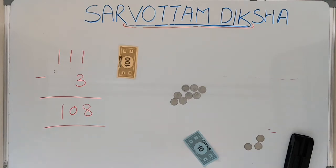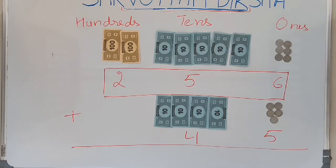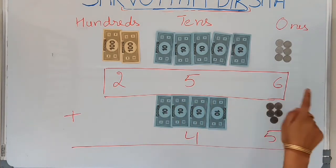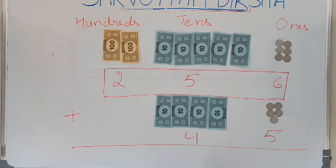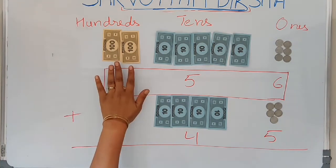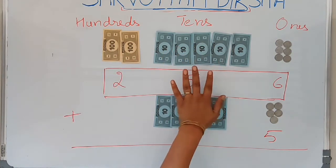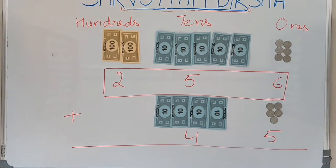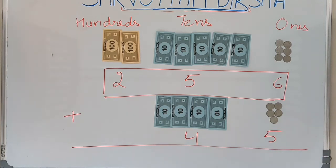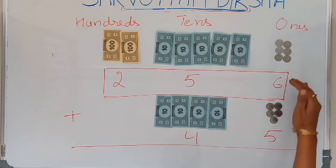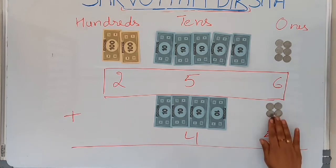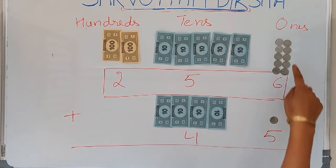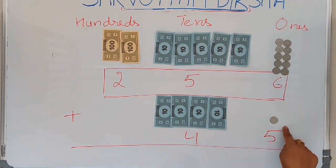So we have discussed borrow in subtraction and carry over in addition. Let us do a few more examples to clear the concept fully. Suppose I am adding 256 to 45. 256 means 2 hundreds, 5 tens, 6 ones. And 45 means 4 tens, 5 ones.